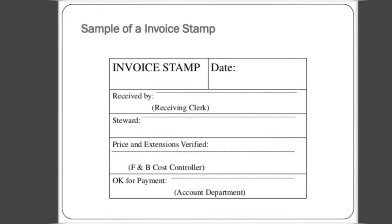Here is a sample of the invoice stamp. The columns include: date received, received by the receiving clerk, steward's stamp, price and extensions verified by the F&B cost controller, and okay for payment by the accountant department.